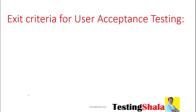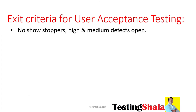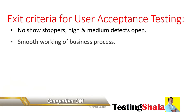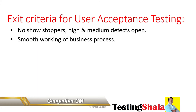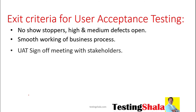What are the criteria we normally expect as part of a UAT exit criteria? The first one is, whenever we are exiting from UAT, there should not be any showstoppers — no high or medium defects should be open. And all the business processes and business flows should work seamlessly without any challenges. That is the second criteria for UAT.